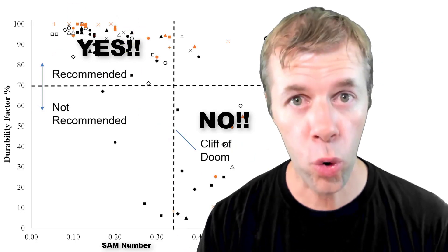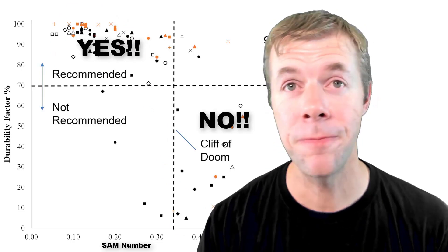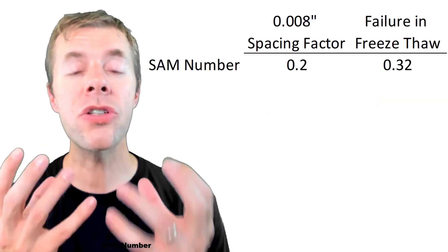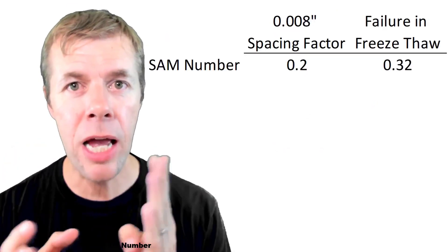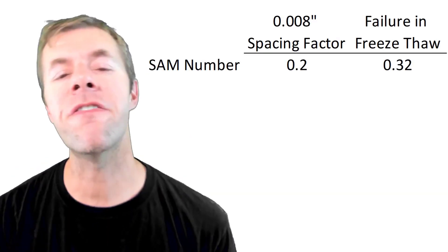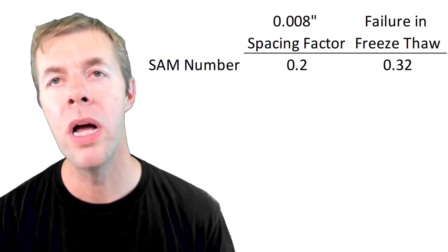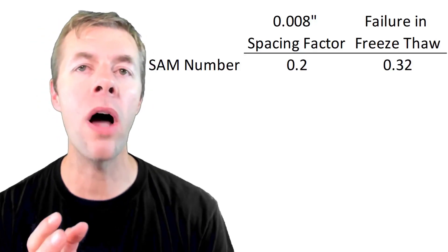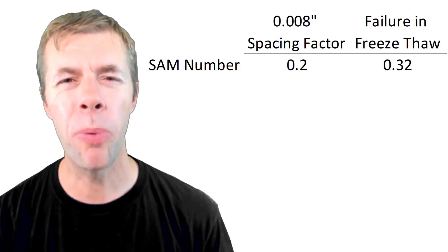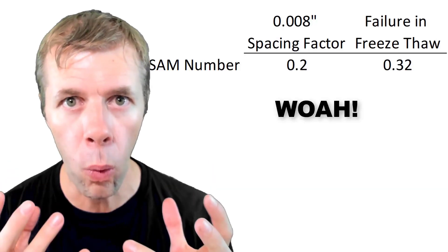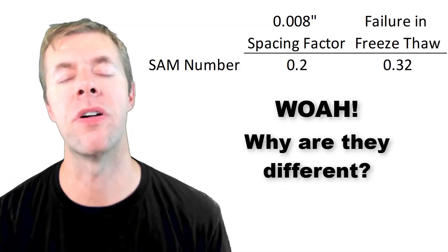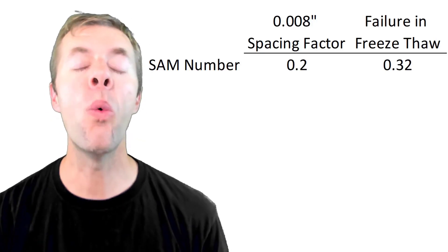So in summary, if I want to look at my SAM limits for a spacing factor of 0.008, I want a SAM number of 0.20. And for failure in the freeze-thaw test I want a SAM number of 0.32. Why are they different?